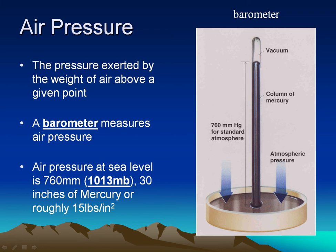Air pressure is the pressure exerted by the weight of the air above a given point — how much it's pushing down on it. This is a traditional barometer, and it's used to measure air pressure. Traditionally, it's an open dish filled with mercury — liquid metal mercury — and it has a tube up the middle that has had all the air sucked out of it. When the air pushes down on this mercury, the mercury can't go down; it's forced to go up inside the tube and rises. The more pressure, the higher it rises, so it measures the air pressure.